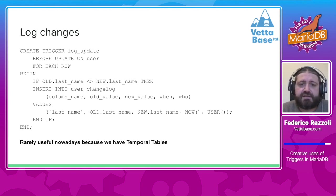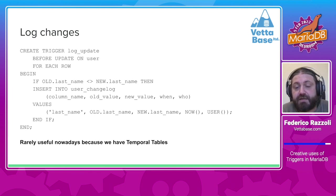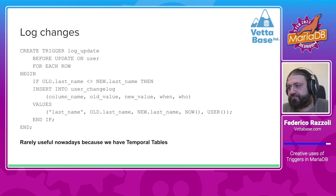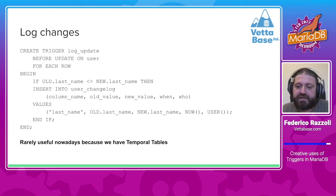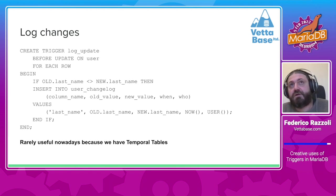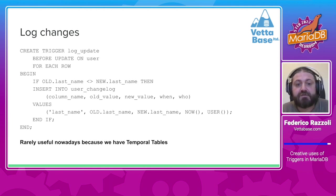You can also use triggers to log changes to a table. Honestly, nowadays this is not very useful because MariaDB has Temporal Tables, which store rows but also store all previous versions of current rows. If you run an update, the older versions will still be there and queryable using a special syntax. But if you're using old versions of MariaDB or have special needs that Temporal Tables don't cover, you can use triggers.